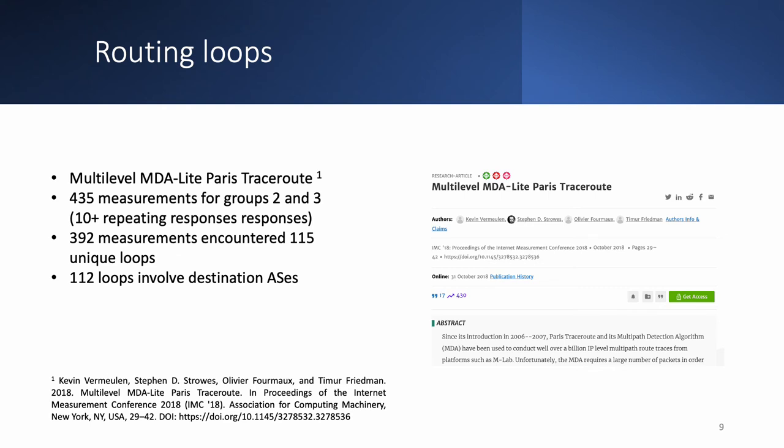Having identified potential routing loops towards amplifiers from groups two and three, we ran traceroute-like measurements towards them. We used an enhanced version of traditional traceroute, and indeed our results confirm that there are loops on the path to the biggest amplifiers. Notably, most of those loops involve destination autonomous systems, meaning they could potentially be triggered from multiple locations.